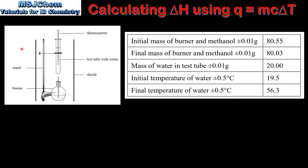In this diagram we have the apparatus used to measure the enthalpy change for a combustion reaction. We have a spirit burner which contains a known mass of methanol. The heat released from the combustion of the methanol increases the temperature of the water in the test tube, and the change in temperature is measured using a thermometer.